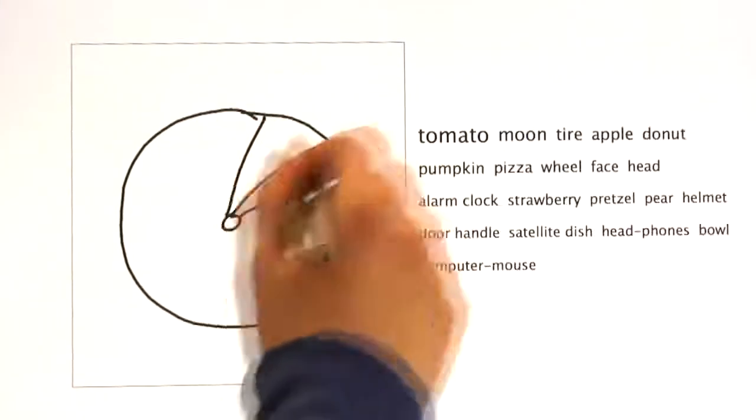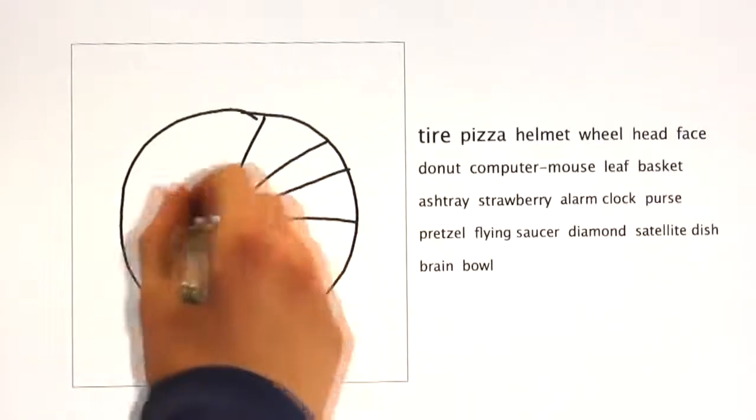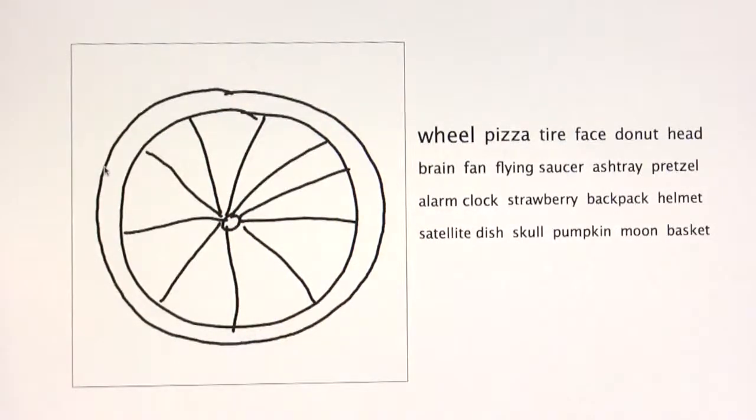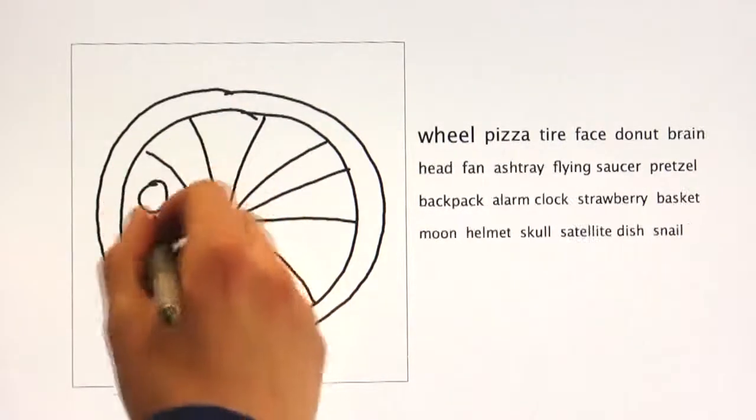Some object categories actually look quite similar when sketched. In that case, additional detail is crucial to recognize the desired category, both for the computer and for humans.